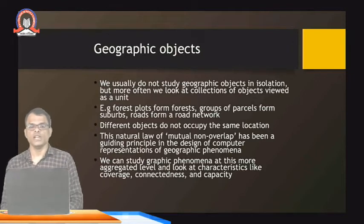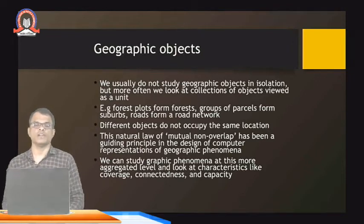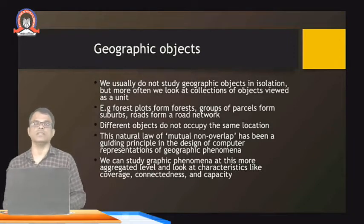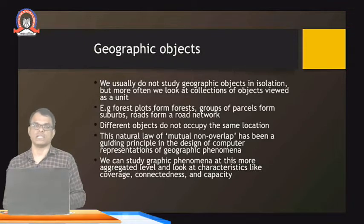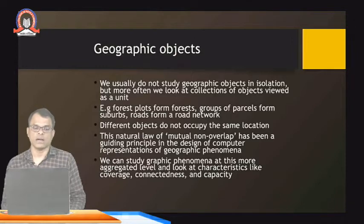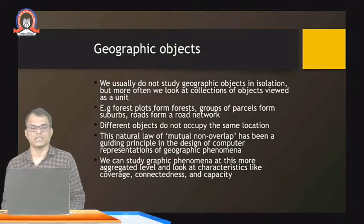We usually do not study geographic objects in isolation, but more often we look at a collection of objects viewed as a unit. These objects are not studied individually — we consider all these objects in a group. Examples include a forest plot from forests, groups of parcels from suburbs, and roads from a road network.